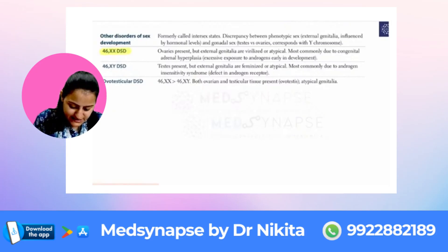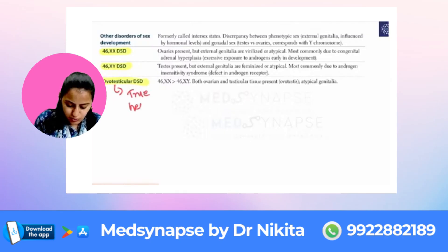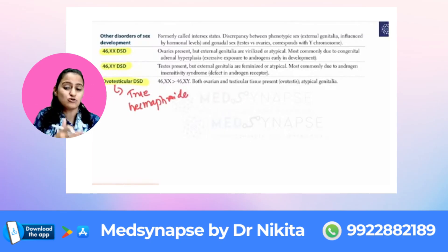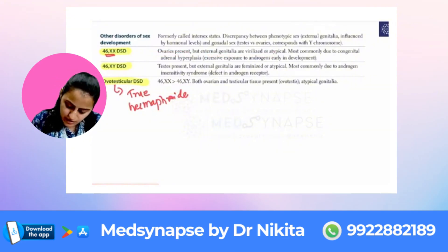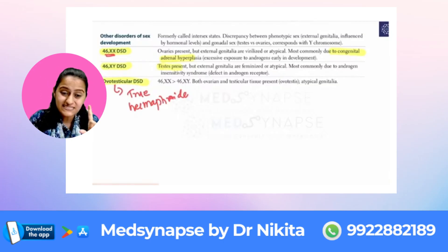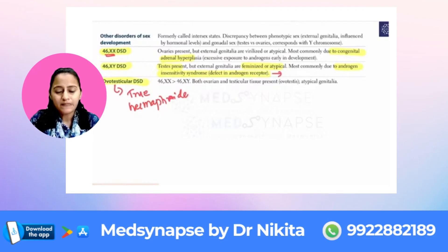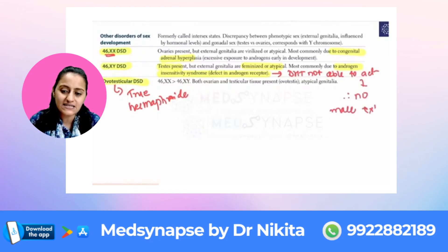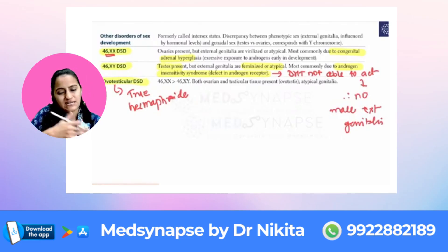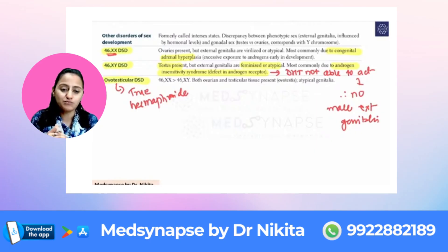Looking at disorders of sex development: 46XX, 46XY, and ovo-testicular. When you have both ovary and testis together, that is a true hermaphrodite. When it is 46XX, the ovaries are present but the external genitalia are virilized — the most common cause is congenital adrenal hyperplasia. When it is 46XY, testis is present but externally it is feminized — the most common cause is androgen insensitivity, i.e., defective androgen receptor. So: male with female external genitalia — androgen insensitivity; female with virilization — congenital adrenal hyperplasia.